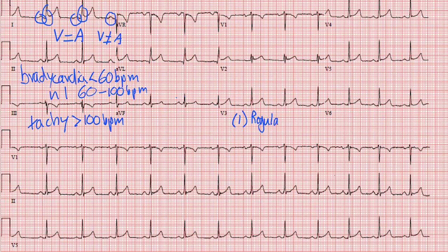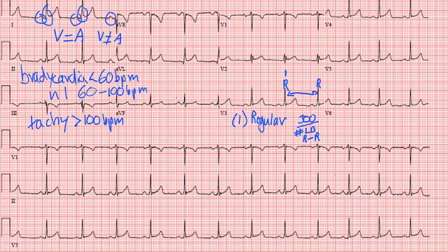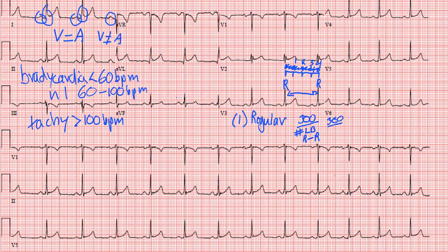So for a regular rhythm, the first way is to do 300 divided by the number of large boxes between the R-to-R interval. We have one R and another R, and the space between them is the interval. We count the number of large boxes between this interval and take 300 divided by that. Counting gives us 1, 2, 3, 4 large boxes, so 300 divided by 4 gives us a rate of 75, which is normal — between 60 and 100.